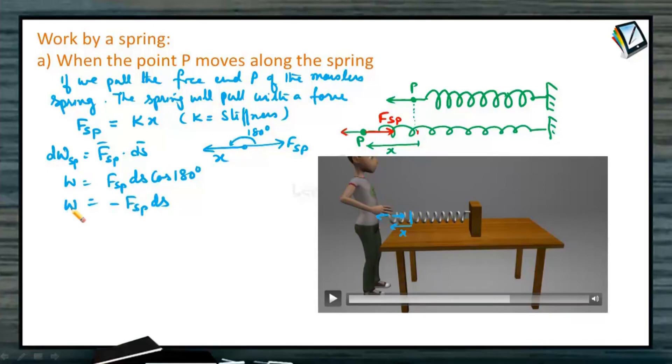What will be the work done by the spring force? Work done by the spring force will be the spring force dot dS vector, or W will be equal to spring force dS cos of angle, now 180 degrees. So it will be negative, minus F spring force into dS.